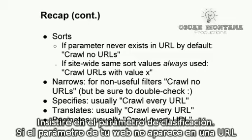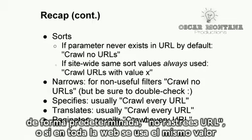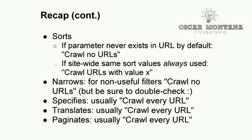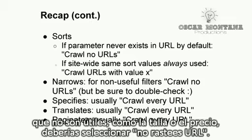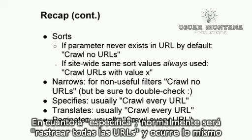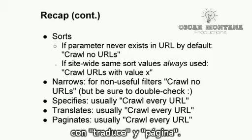One more time: for the sort parameter, if it never exists in a URL by default, then crawl no URLs. Or if site-wide the same sort value is always used, then crawl URLs with value X. For narrows, if your narrows parameter causes non-useful filtering for searchers — like size or price — then you might select crawl no URLs, but be sure to double-check that none of your important pages will be affected. For specifies, it's usually crawl every URL, and the same applies to translates and paginates.